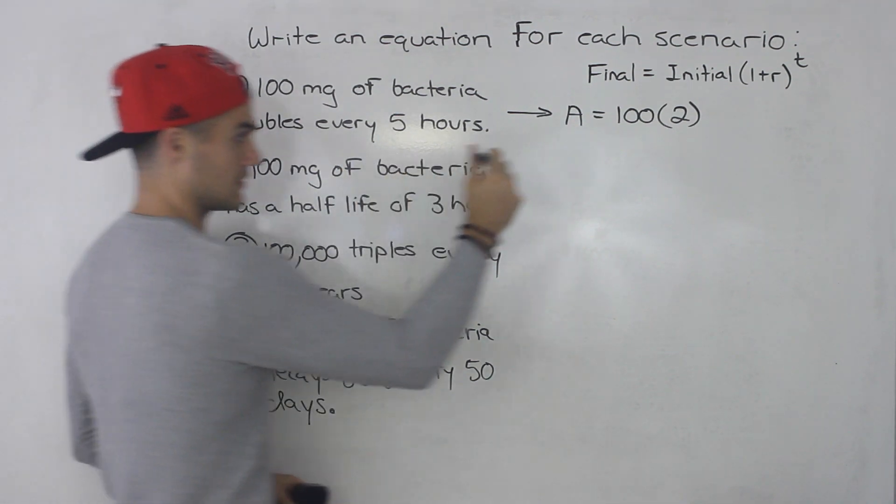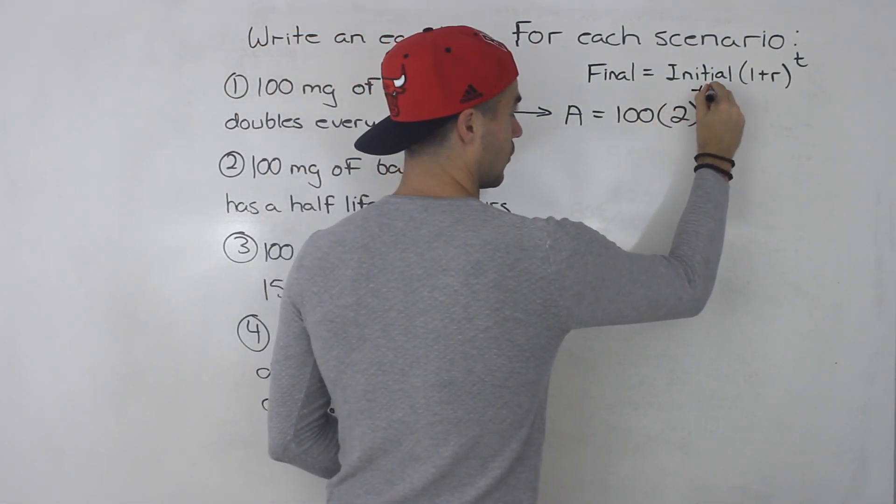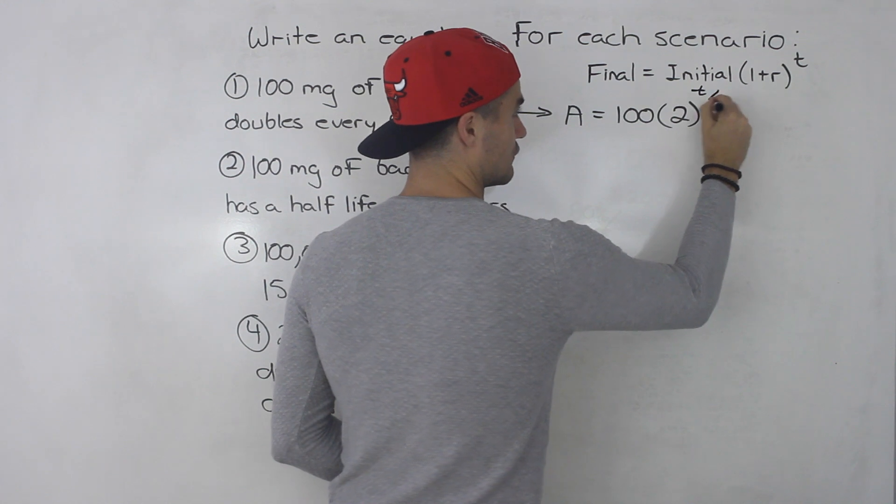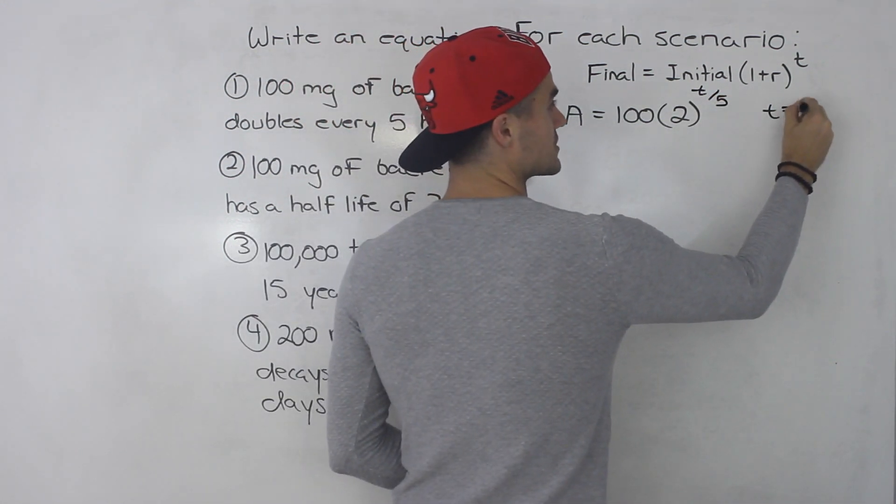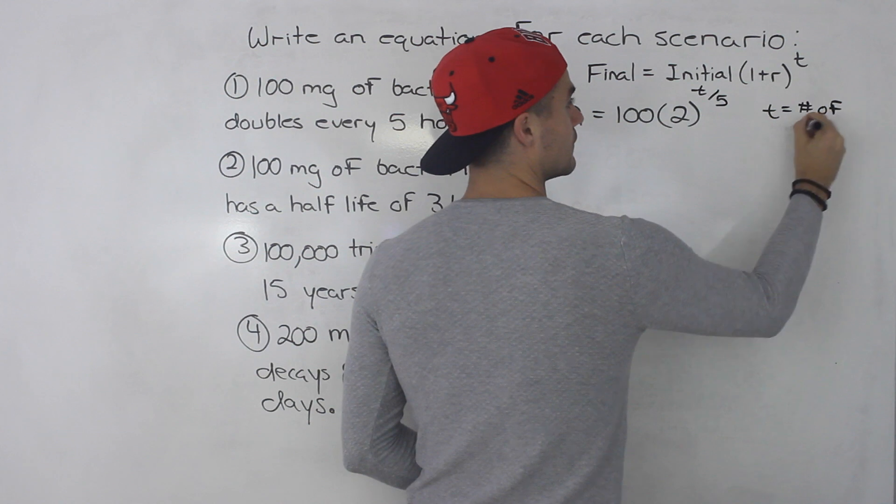But since it says every five hours here, we would put the t over five, if we want the t value to represent the number of hours.